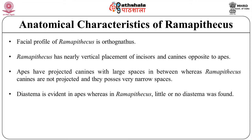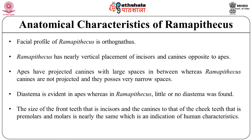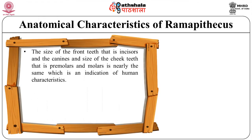The gap between two teeth is usually referred to as diastema, and it is evident in apes, whereas in Ramapithecus there is little or no diastema. The size of the front teeth — that is, incisors and canines — relative to that of the cheek teeth — premolars and molars — is nearly the same, which is an indication of human characteristics.